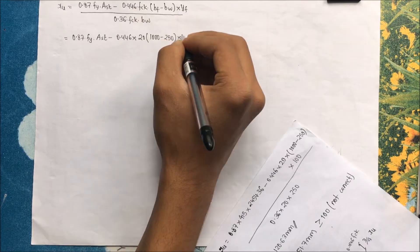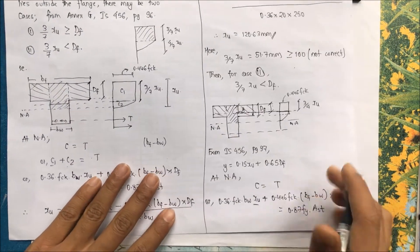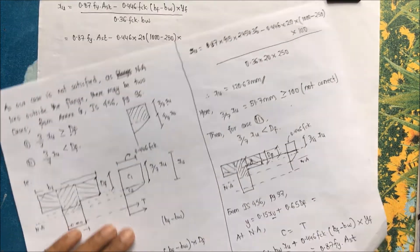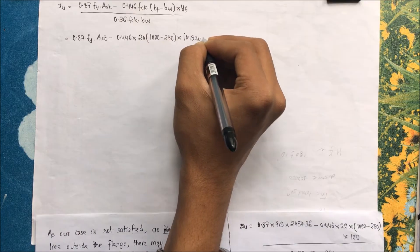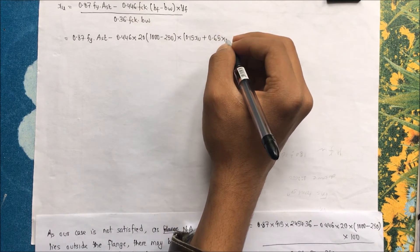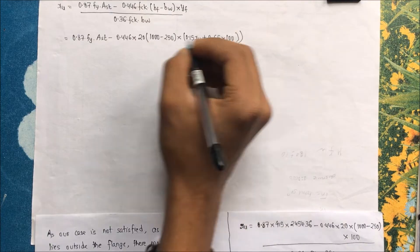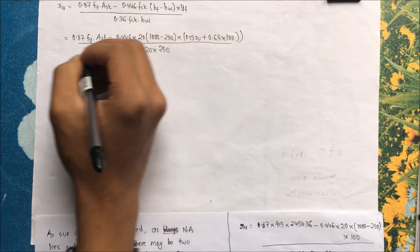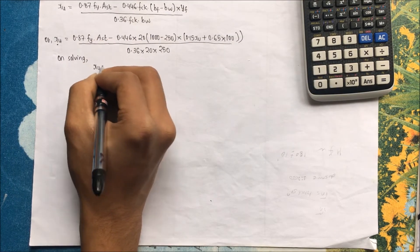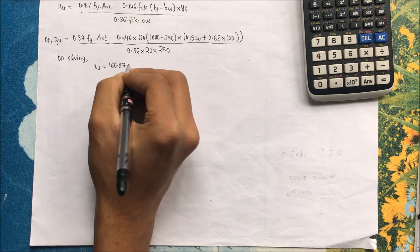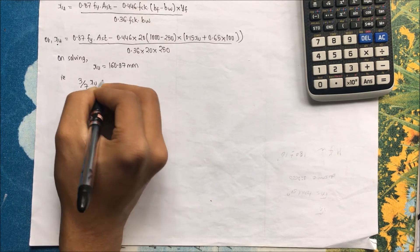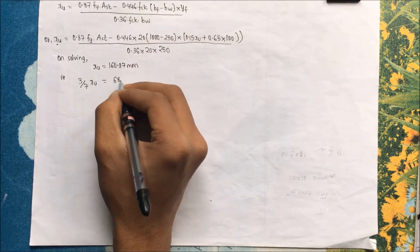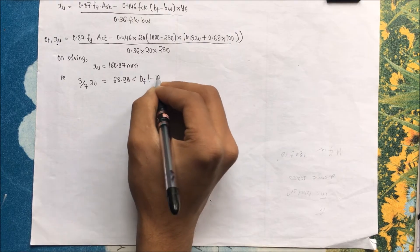Substituting YF = 0.15 × XU + 0.65 × 100 into the equilibrium equation, with FCK = 20, BW = 250, BF = 1000: solving gives XU = 160.97 mm. Checking: 3/7 × 160.97 = 68.98 mm, which is less than DF = 100 mm. The assumption for Case 2 is correct.